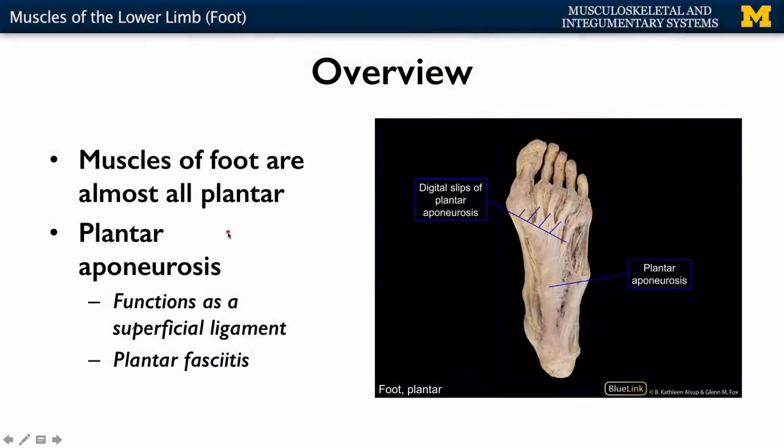If you think about manipulating things and flexing and extending the digits associated with your hand as opposed to your foot, you can understand that that's not quite as important. It's more important in terms of really being able to keep the foot and the joints associated with the foot safe. Not only are the muscles going to play a role in terms of that, you're going to have specific connective tissues, or aponeuroses, playing a role. So the plantar aponeurosis — sometimes referred to as plantar fascia — is going to play a really important role in terms of keeping those arches of the foot safe, as well as the specific joints.